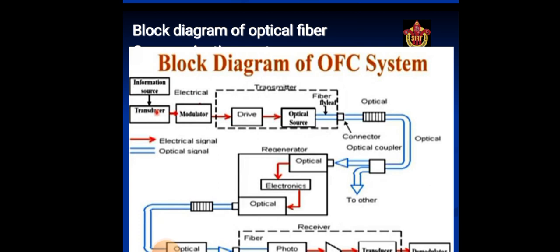Information channel. The information channel is the path between the transmitter and receiver. In fiber optics communications, a glass or plastic fiber is the channel. Desirable characteristics of the information channel include low attenuation and large light acceptance cone angle.